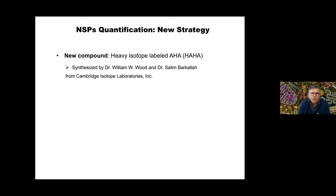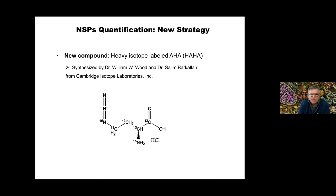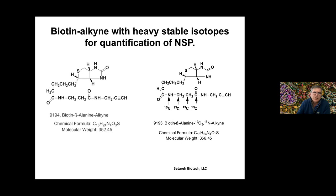To improve on this process and make it more quantitative, we contracted with Cambridge Isotope Labs — with Dr. William Wood and Dr. Saleem Barkala — to synthesize a heavy isotope labeled version of azidohomoalanine. They inserted heavy isotopes into the amino acid, with N15 and C13 in various locations, giving us about a 6 AMU difference between normal and heavy azidohomoalanine. You can also use heavy labeled biotin alkynes as a way to enrich and quantitate, which we do in some strategies.